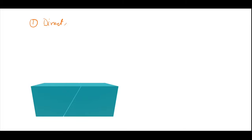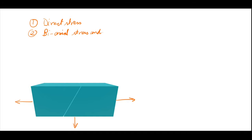For the analysis of compound stresses we consider the following cases. First is the direct stress condition, where we consider only the tensile or compressive stress in one direction. Second is the biaxial stress condition, where we consider stresses — either tensile or compressive — in two directions.